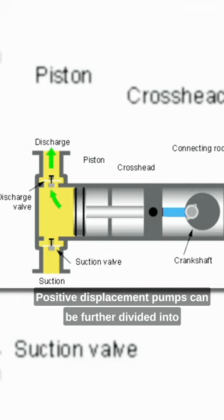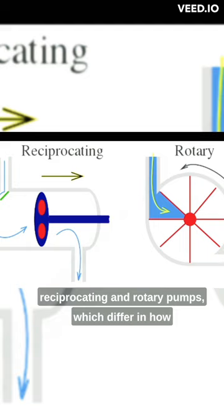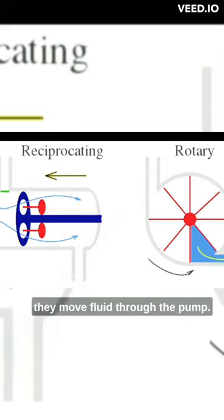Positive displacement pumps can be further divided into reciprocating and rotary pumps, which differ in how they move fluid through the pump.